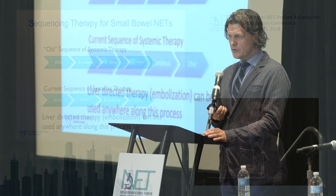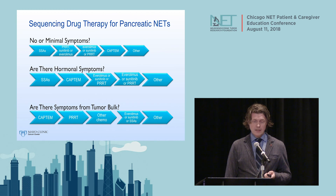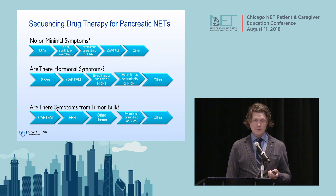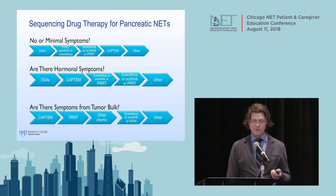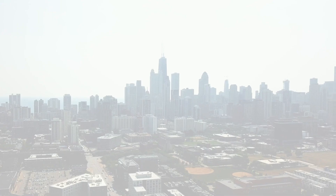For pancreatic NETs with no or minimal symptoms, somatostatin analogs are very reasonable. Then we have PRRT, sunitinib, and everolimus—three options, which is good, but the challenge is knowing how to sequence them and what to pick first. For patients with hormonal symptoms, somatostatin analogs are appropriate. If tumors are really bulky or painful, capecitabine-temozolomide chemotherapy, PRRT, other chemotherapies like FOLFOX and CAPOX, and then everolimus, sunitinib, or somatostatin analogs are options.